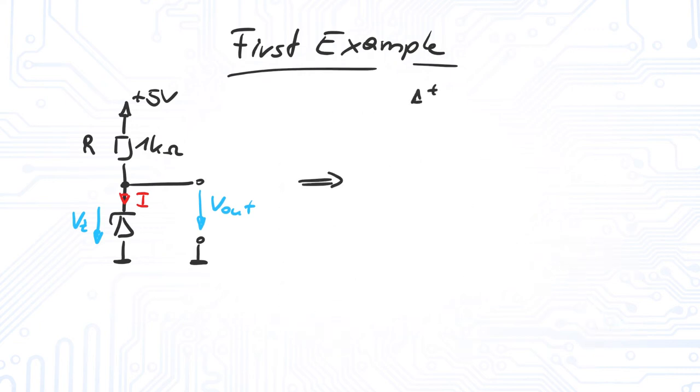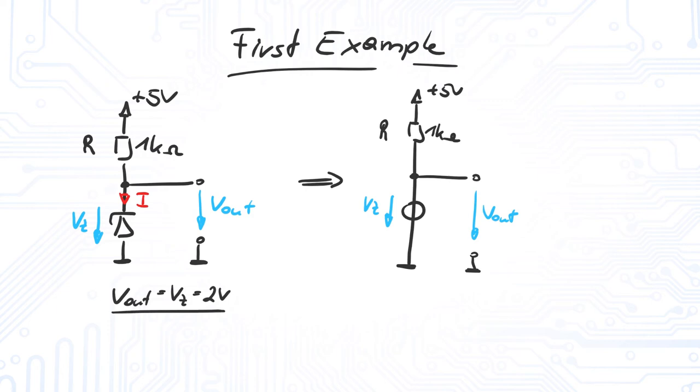For our example, it's fairly obvious that the Zener diode operates in breakdown. Hence, we replace the Zener diode with a voltage source Vz. The output voltage equals Vz, of course.